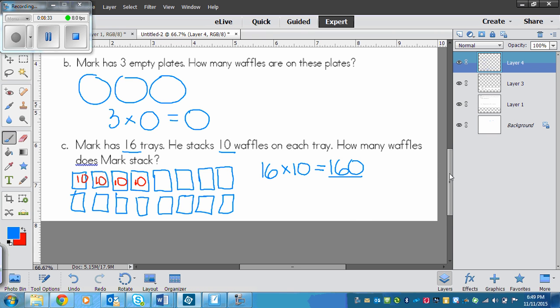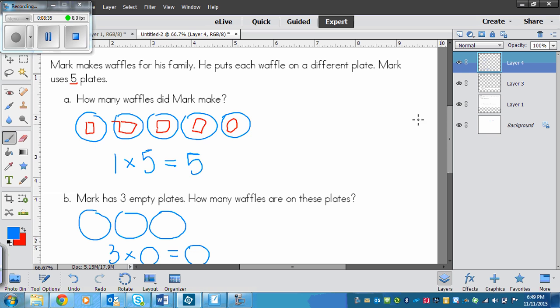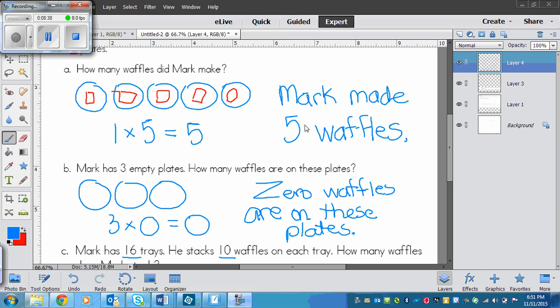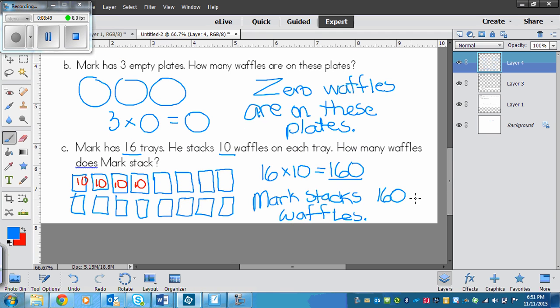Now, I forgot to write all of my sentences, so let's go back and do that now. So here's my sentences. Mark made five waffles. For A, B, zero waffles are on these plates. And C has Mark stacks 160 waffles.